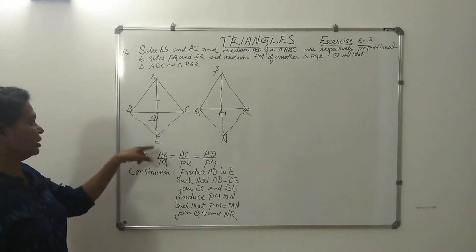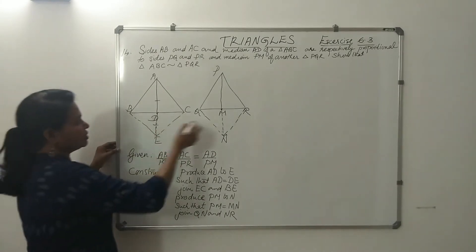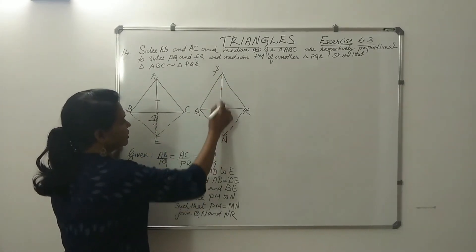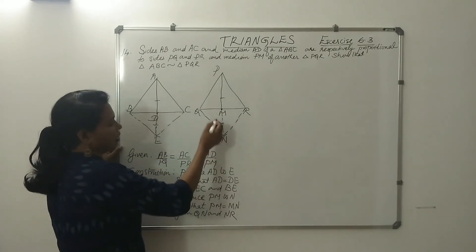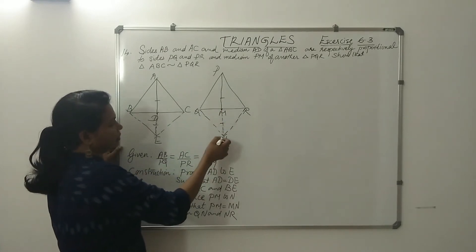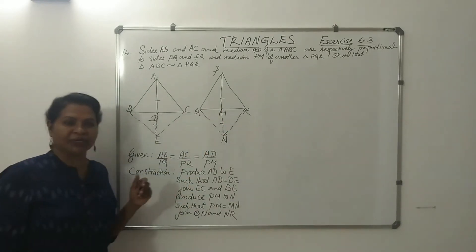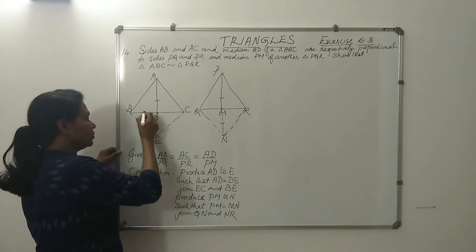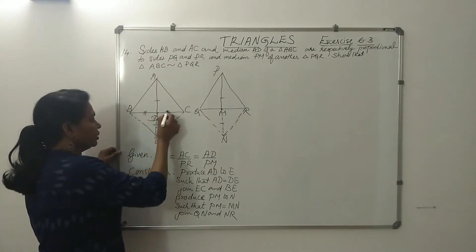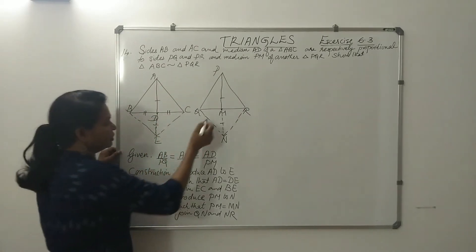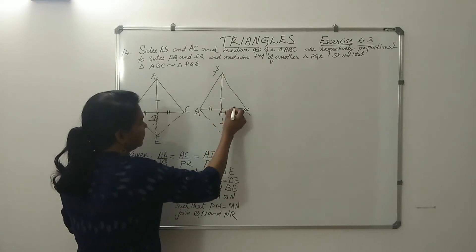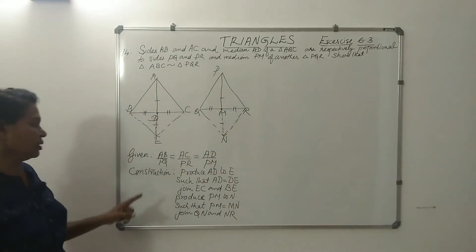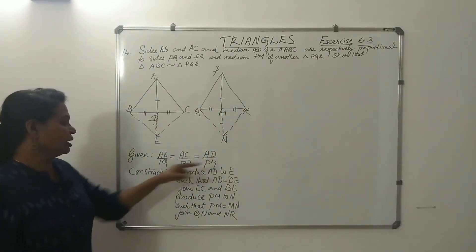Produce PM to N such that PM equal to MN and join RN and QN. This is how it is constructed. Since AD is the median, BD equal to CD. And since PM is the median, QM equal to MR.